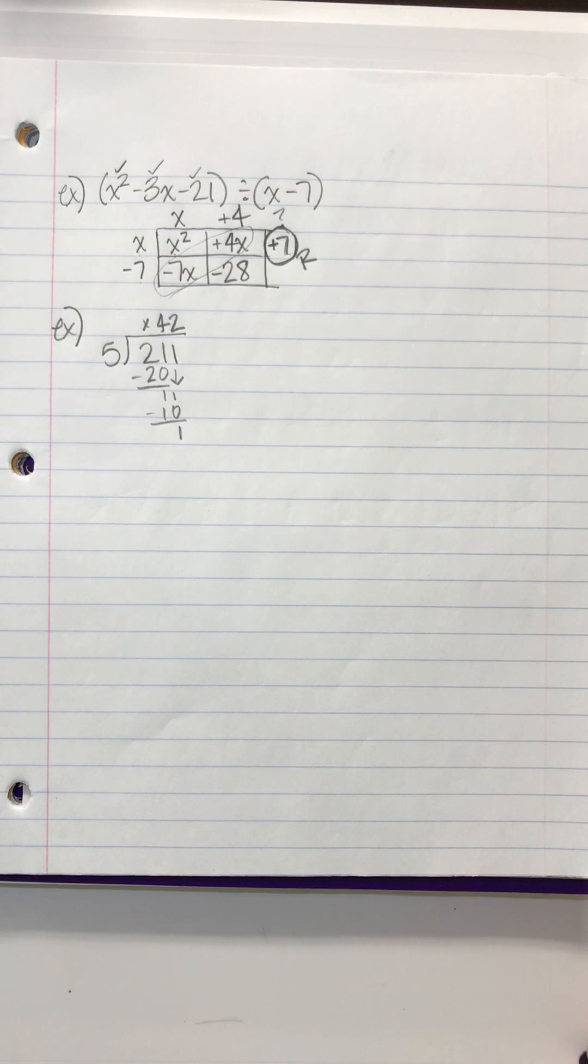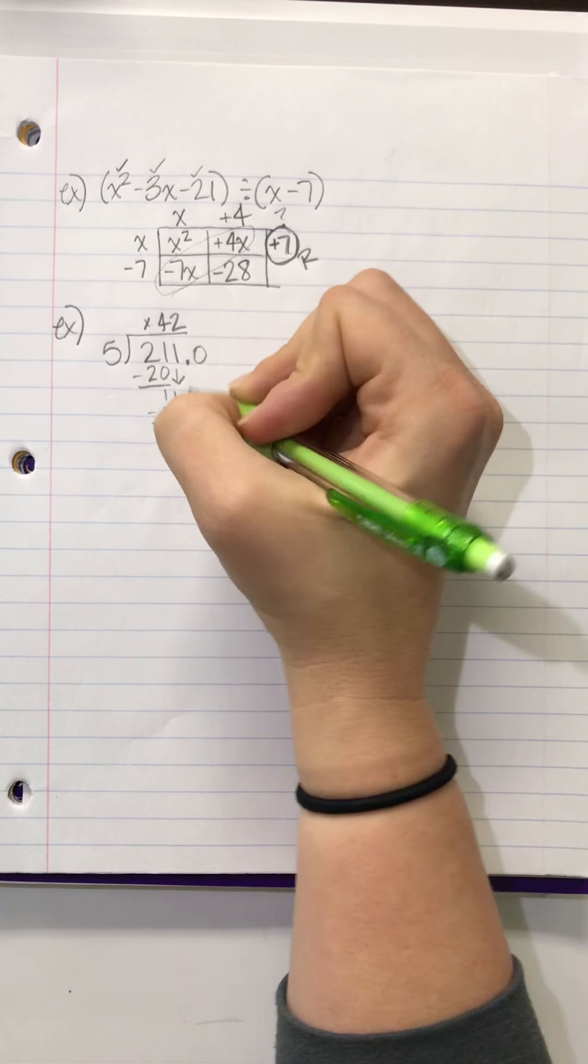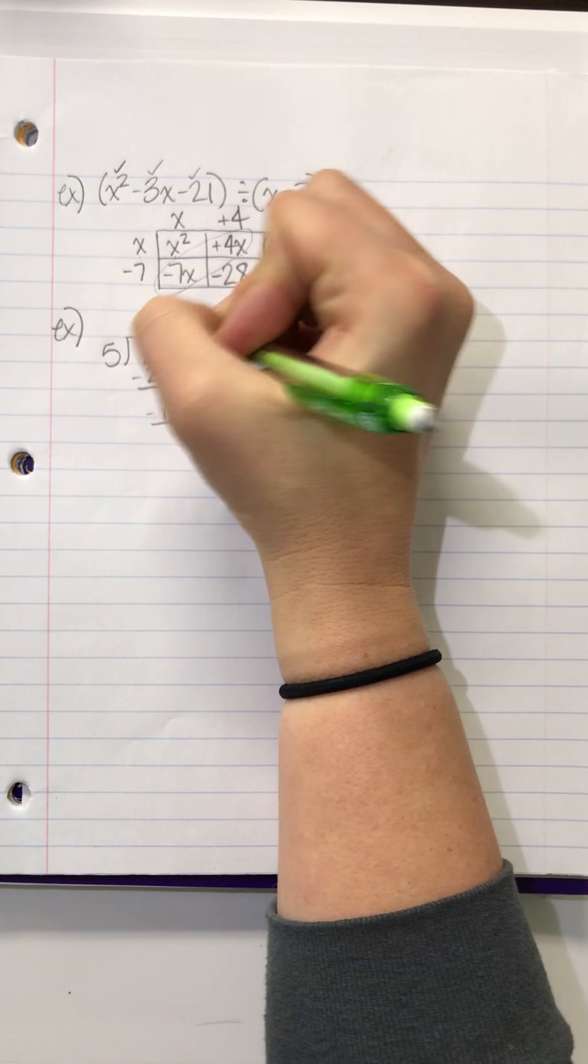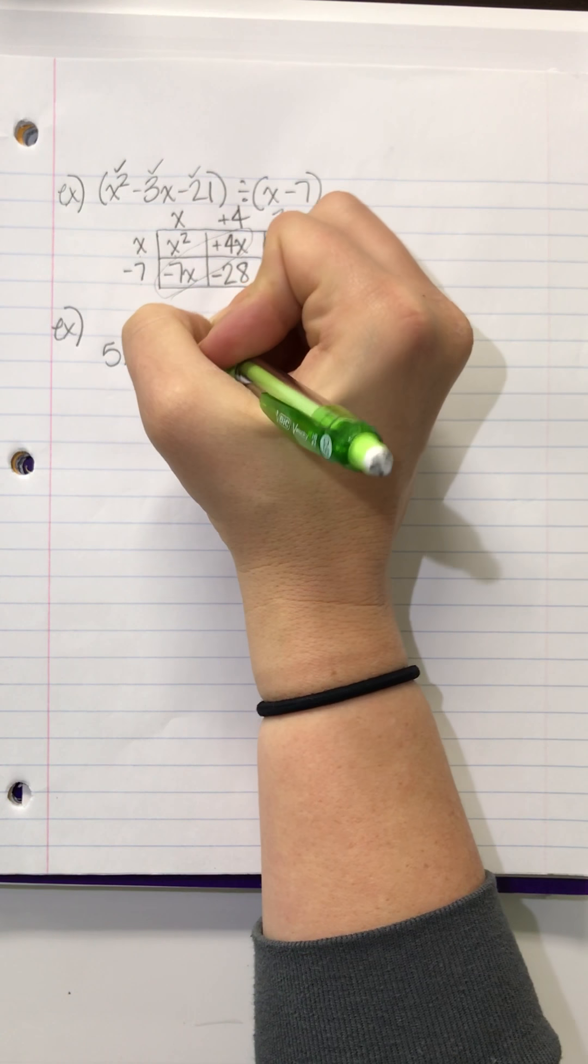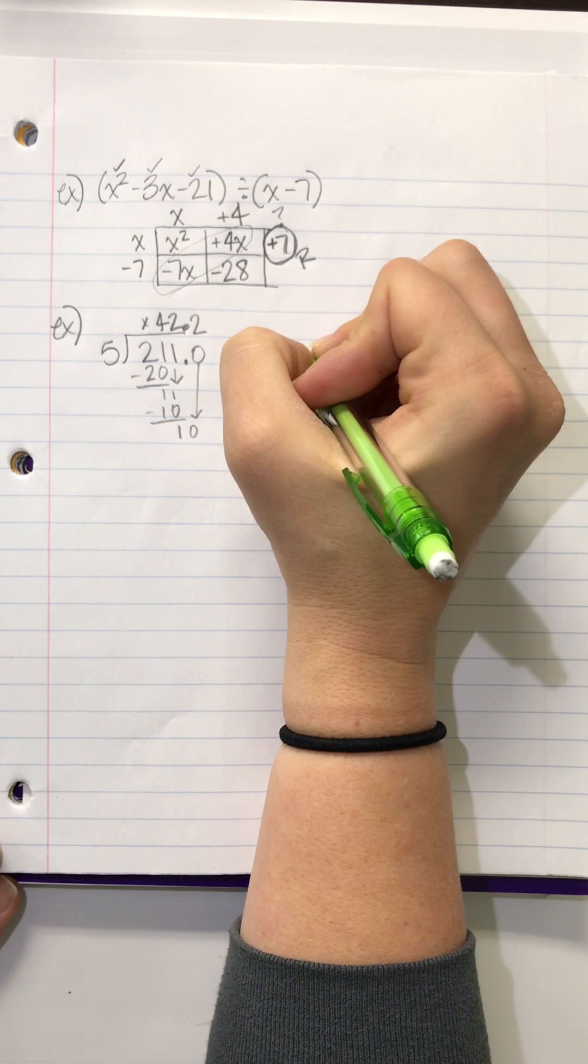Twice. That gives you 10, which gives you a 1. Now, you guys learned, like, I don't know, 6th grade? And you never looked back to add a decimal and a 0. And to say, okay, well, how many times does 5 go into 10? 2. So, the answer is 42.2, right?